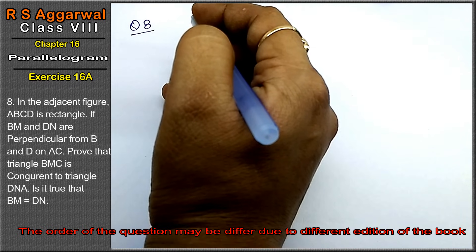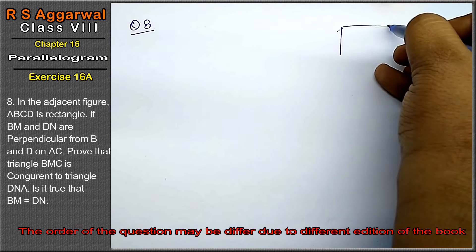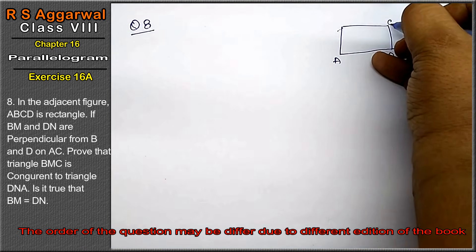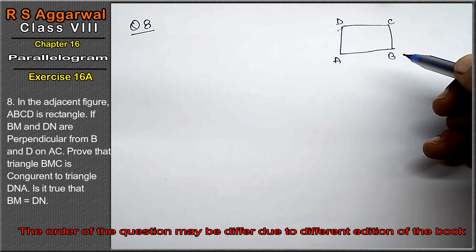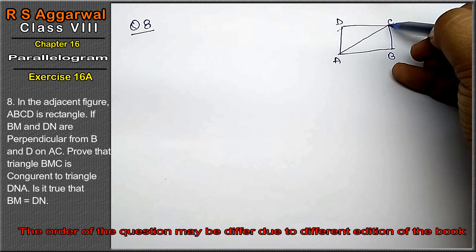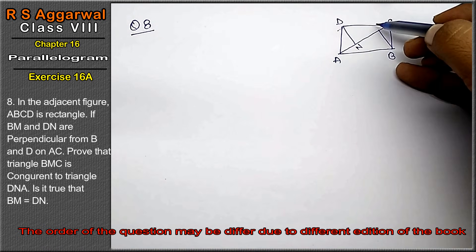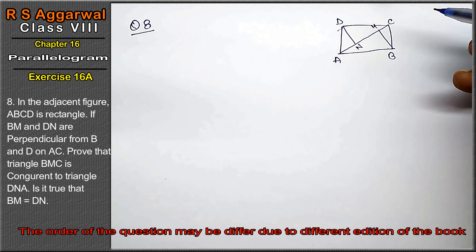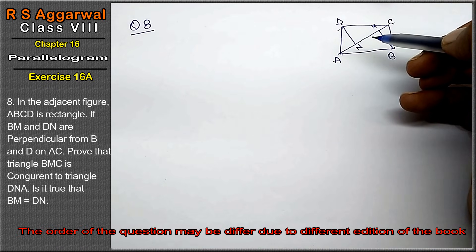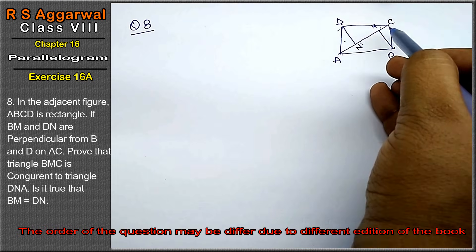Let's do question number 8 of exercise 16A, that is parallelogram. Question number 8: in the adjacent figure, ABCD is a rectangle with vertices A, B, C, and D. BM and DN are perpendiculars drawn from B and D onto diagonal AC. Prove that triangle BMC is congruent to triangle DNA, and that BM equals DN.